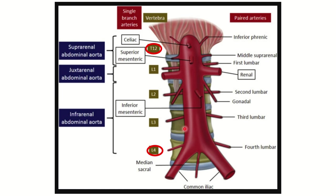So the abdominal aorta starts at the level of T12 as a continuation of the descending thoracic aorta, and it bifurcates into the right and left common iliac arteries at the level of the lumbar 4 vertebra. Here we can see the different branches of the abdominal aorta.